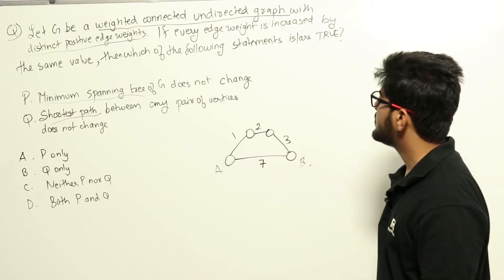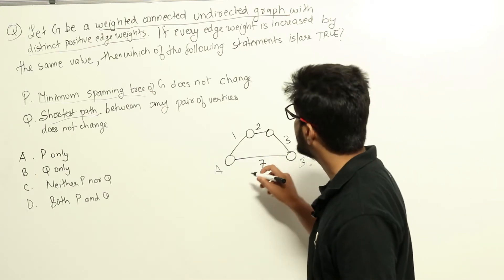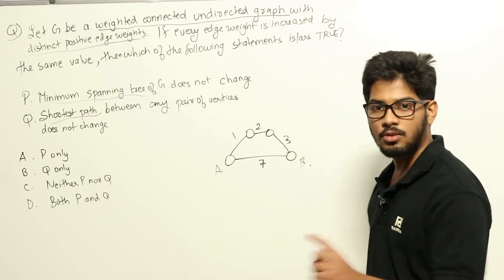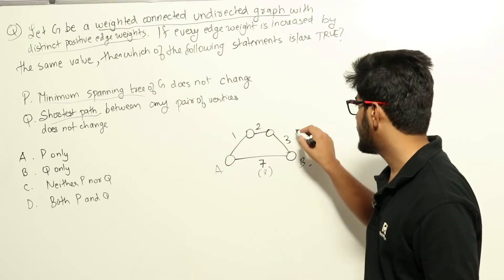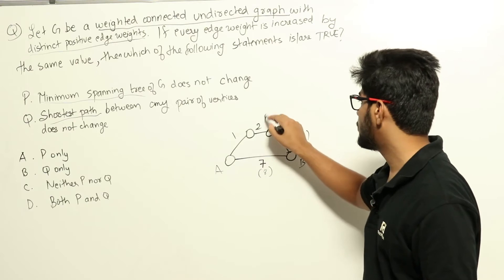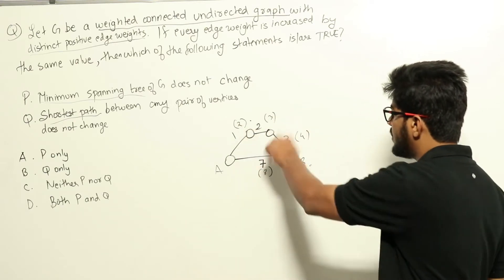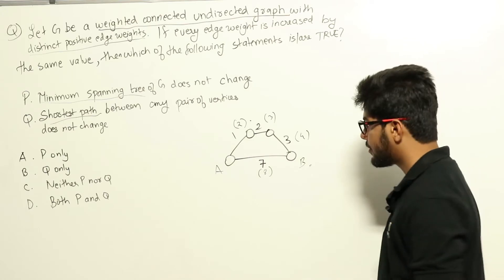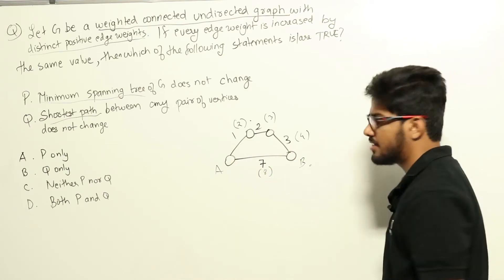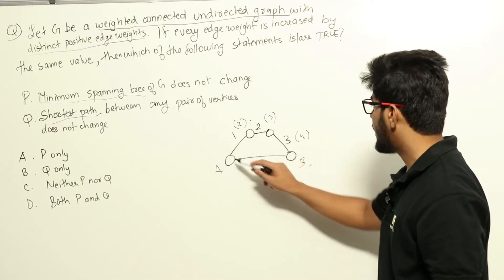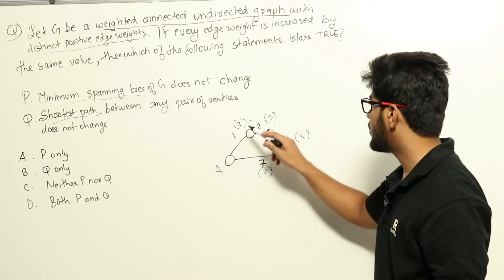If every edge weight is increased by the same value, what will be the new edge weights? Let's say we are increasing by 1. So this edge weight will be 7 plus 1 = 8; 3 plus 1 = 4; 2 plus 1 = 3; 1 plus 1 = 2. Now the edge weights are 2, 3, 4, and 8. Which is the shortest path? A to B directly is 8. A to B via the other route is 2 plus 3 plus 4, that is 9.